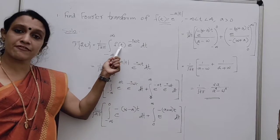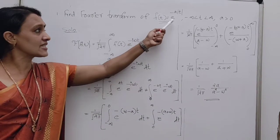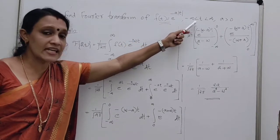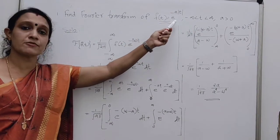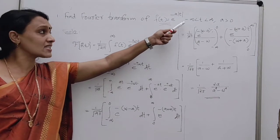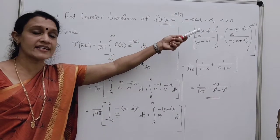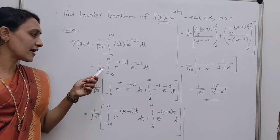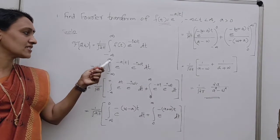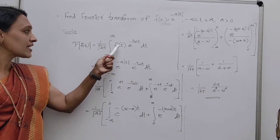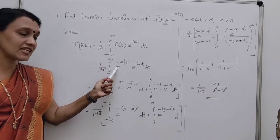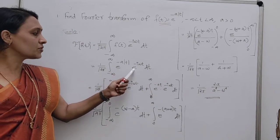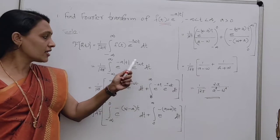Now, f(t) is e^(-a|t|). Look at the interval — it is given over the whole interval minus infinity to infinity, so we use a single integral. We substitute f(t) = e^(-a|t|) into e^(-iωt) dt. Now, how to integrate this function? We need to remember the definition of the modulus function.